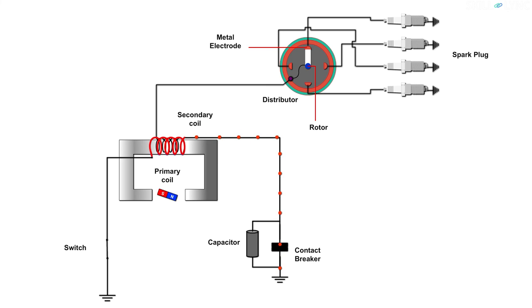As soon as the contact breaker opens, the circuit becomes open and the current starts flowing through the capacitor. This in turn changes the magnetic field around the primary coil which induces a high voltage in the secondary coil. Because of this, a high current flow to the distributor from the secondary coil takes place.